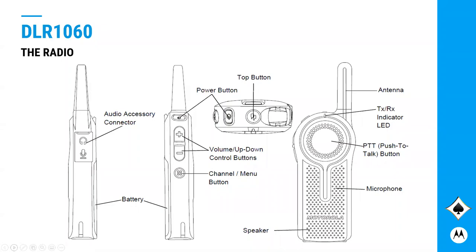Looking at the physical radio: it has an external antenna, giving quite good coverage even when worn down on the belt. It has a large PTT button. There's an accessory connector for an RSM or surveillance accessory, and easy-to-adjust volume up and down buttons. One thing to be aware of: when you push the PTT from the front of the radio it will only enable the front mic. If you have an accessory connected, you have to use the PTT from the accessory to enable the accessory microphone.